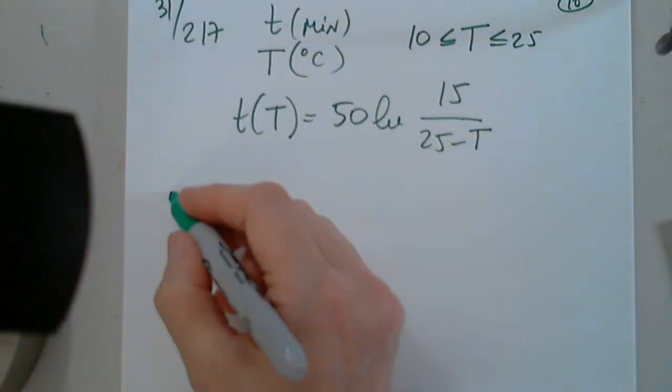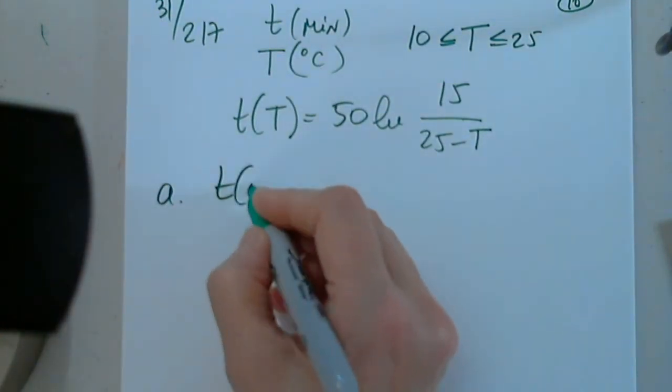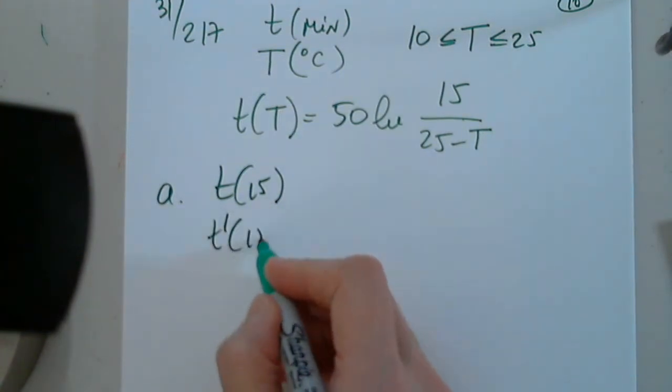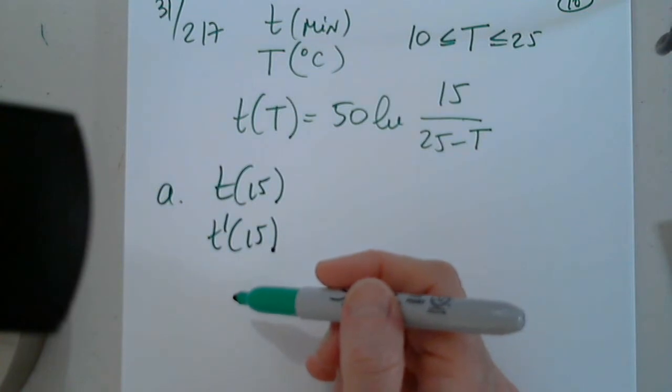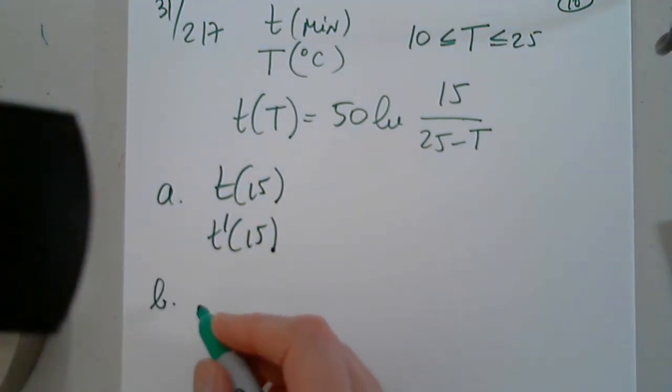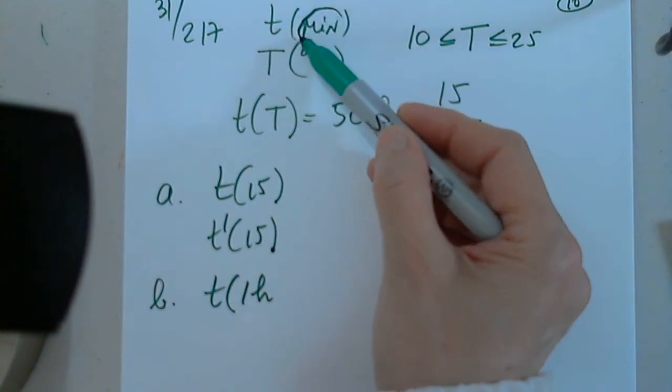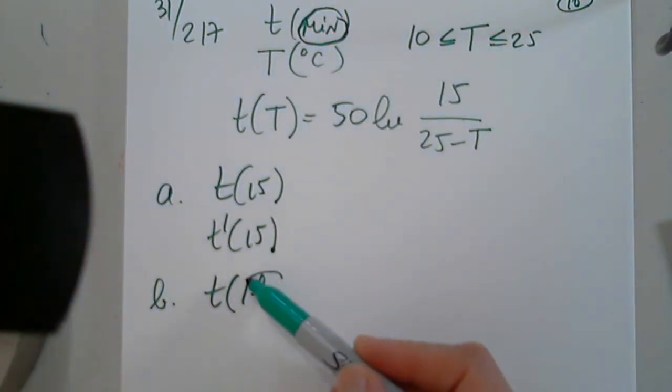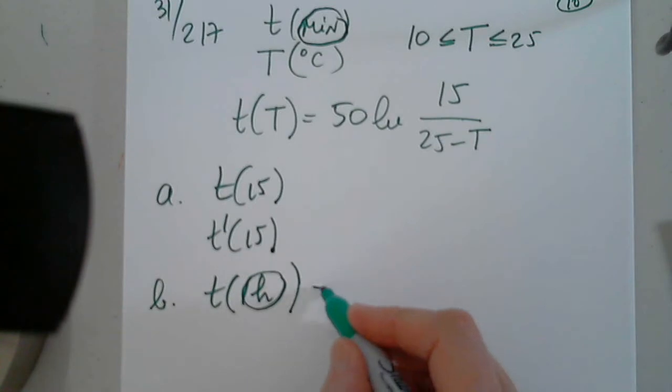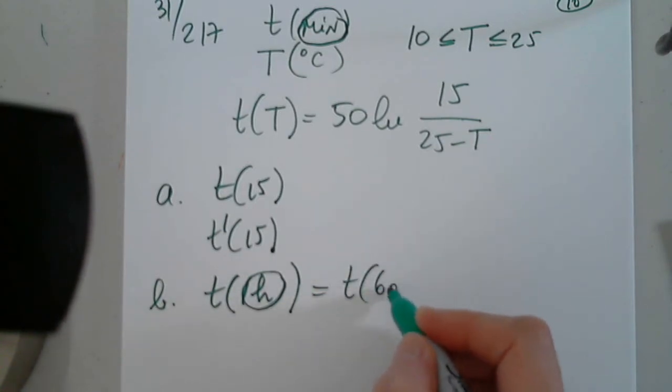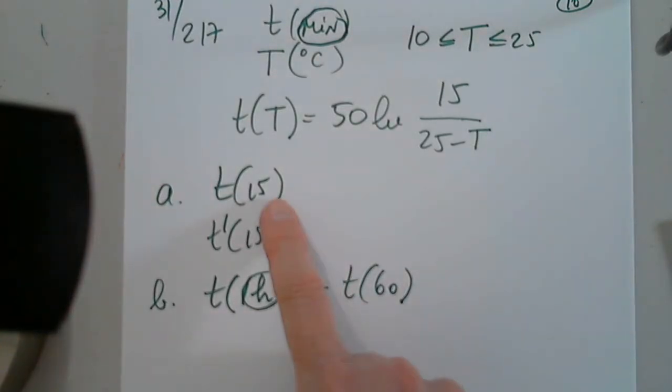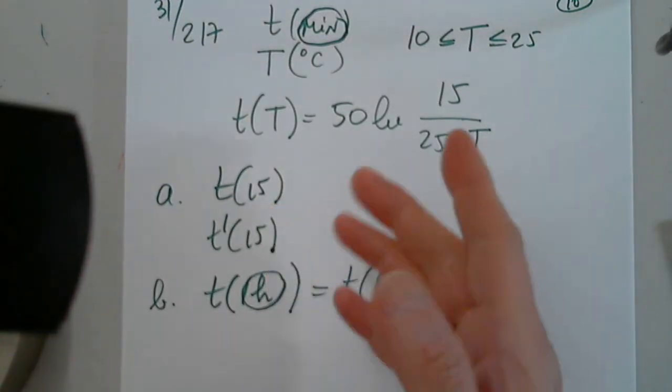They're asking us in part A to find t(15) and then t'(15) and explain what they represent. And then in part B, they want us to find the water temperature after one hour. I have to find t(60 minutes).